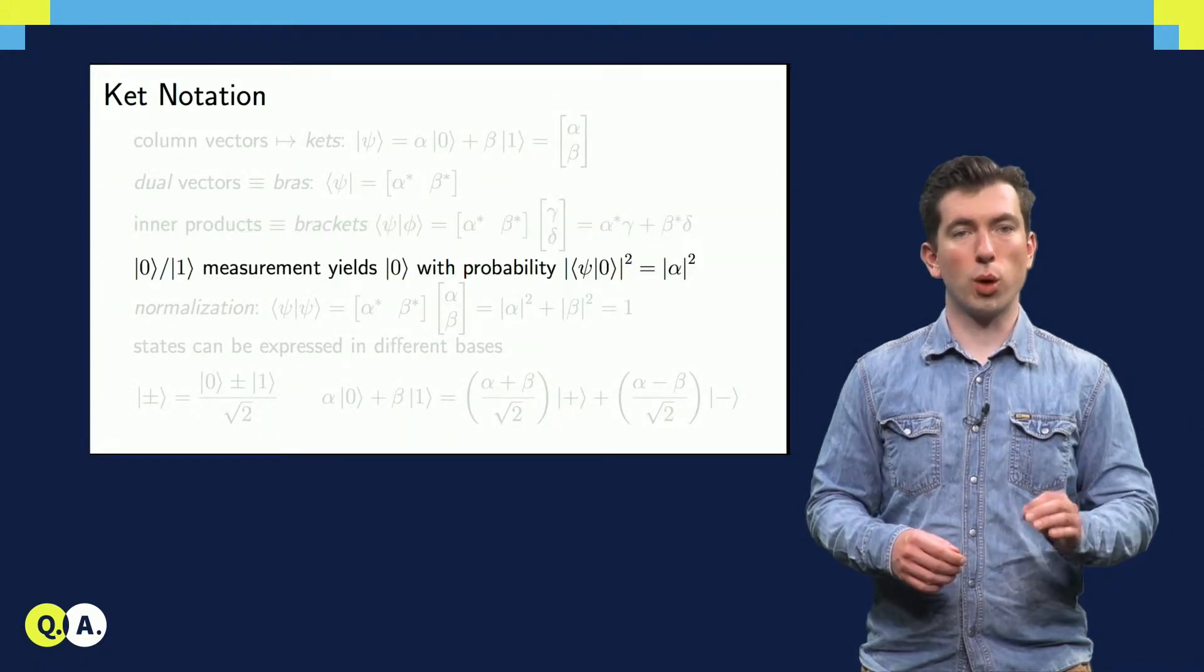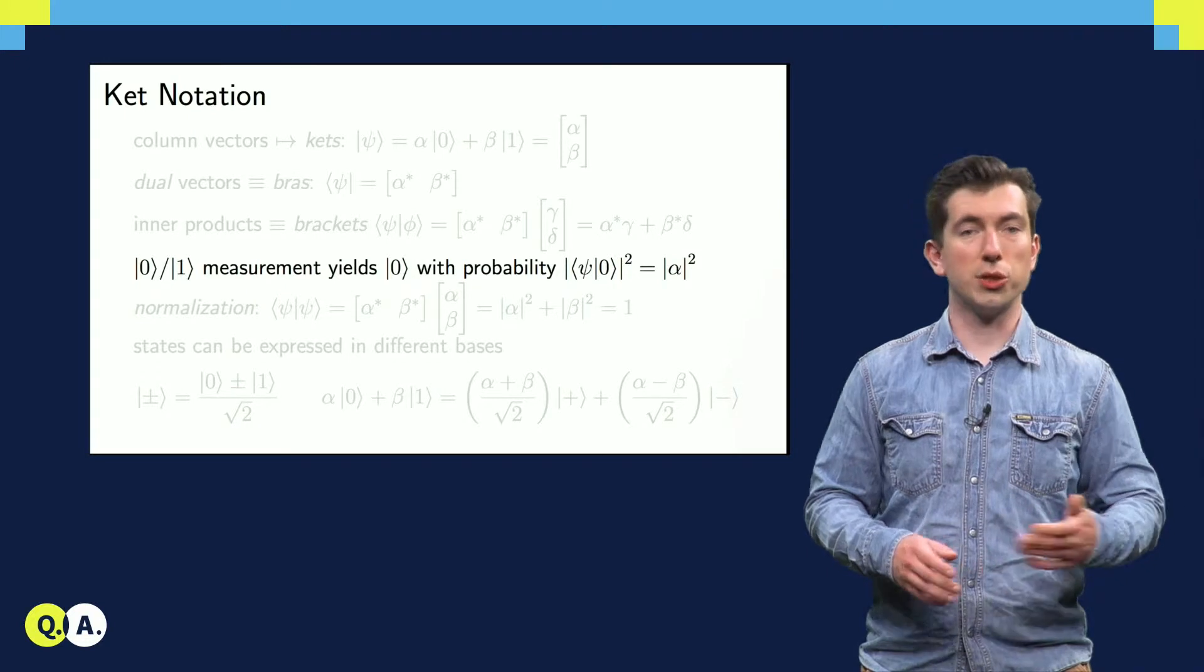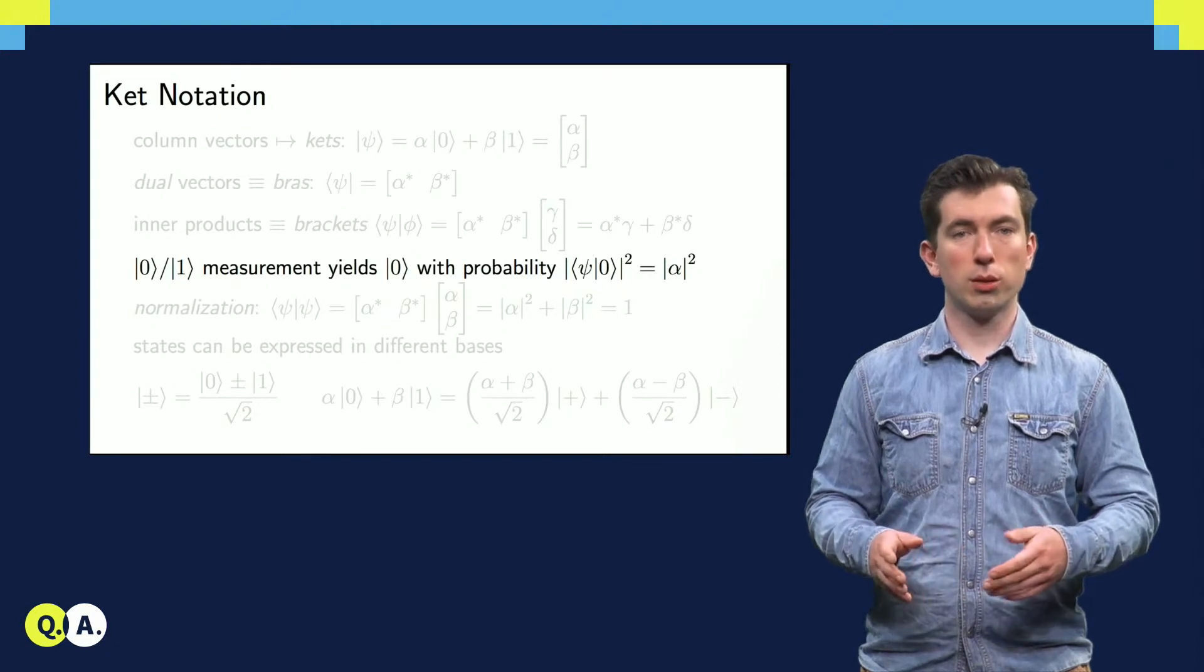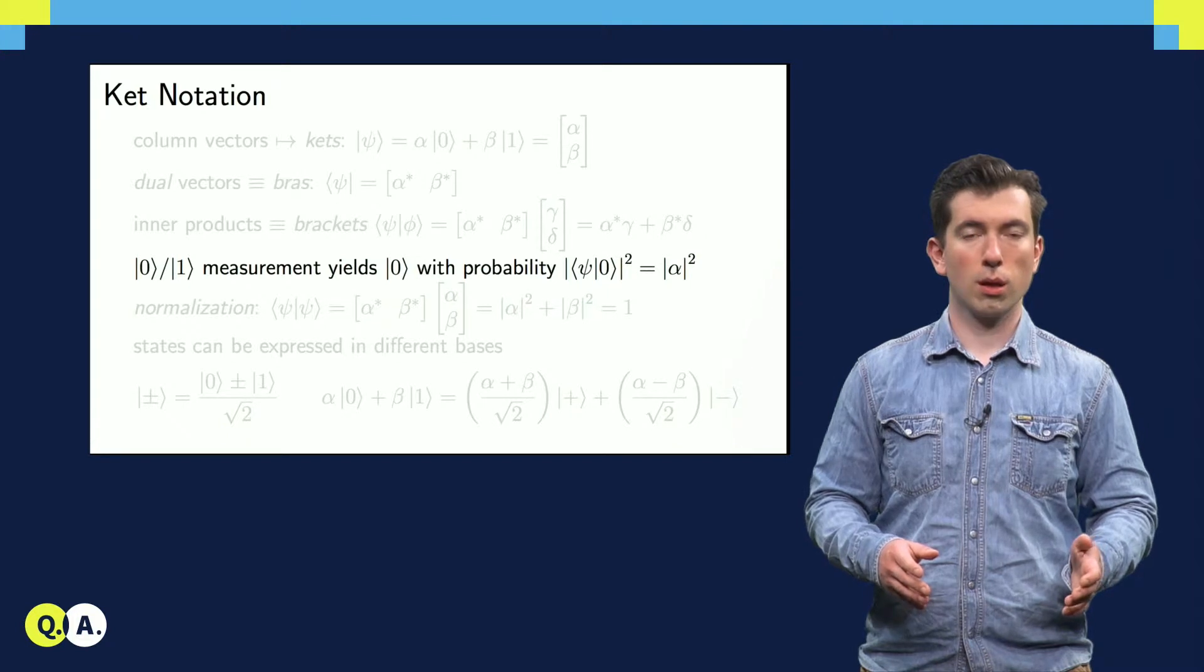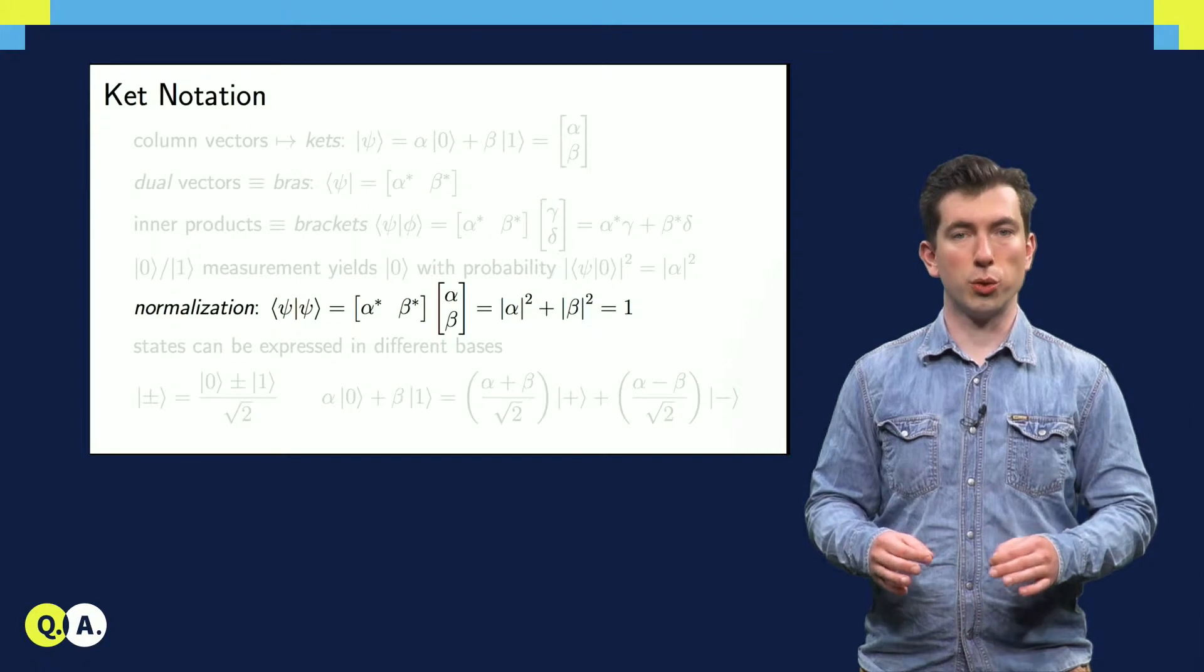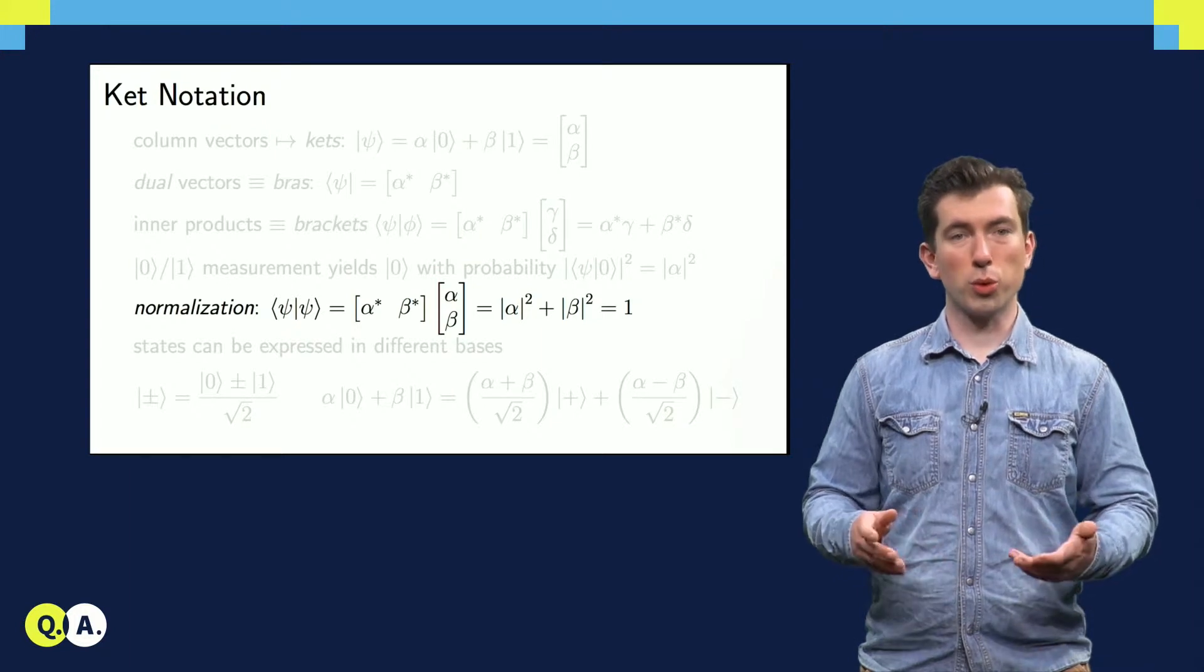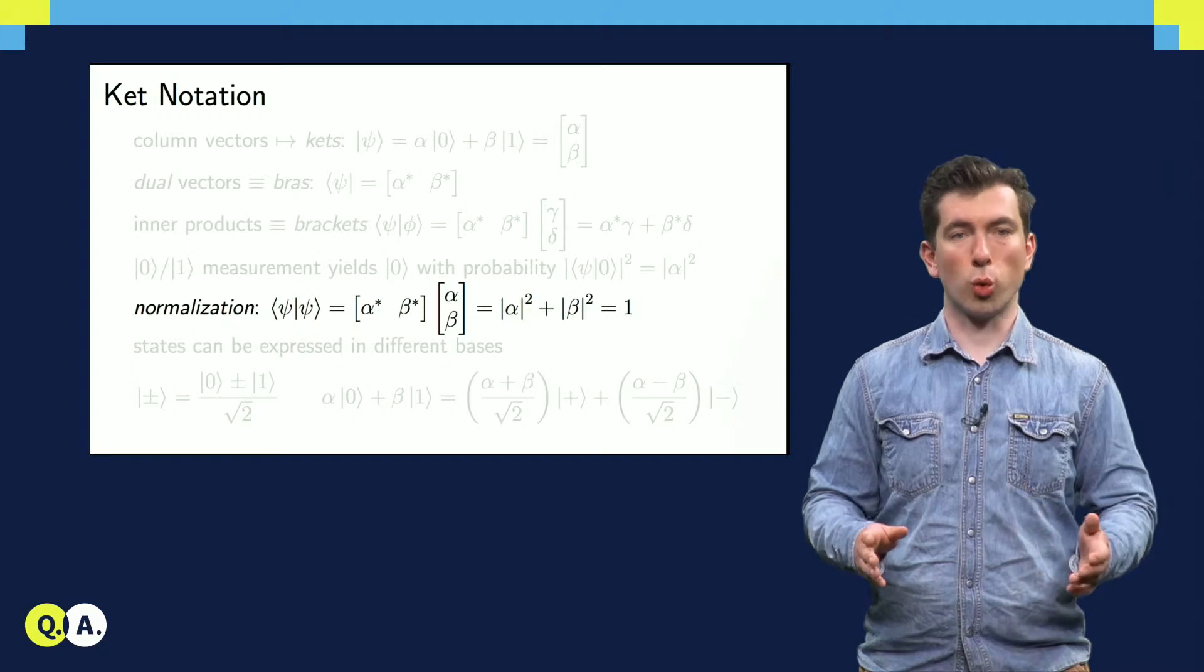A central feature of quantum mechanics is that when we perform a measurement to determine whether a state is 0 or 1, for example, we get a random answer, and the probability of measuring a state to be 0 is given by the squared magnitude of its zero coefficient. One consequence of this is that since such a measurement on a qubit state must result in 0 or 1, these squared magnitudes must sum to 1 since they're probabilities. This is called Born's rule, and the constraint that the probabilities must sum to 1 is called normalization.